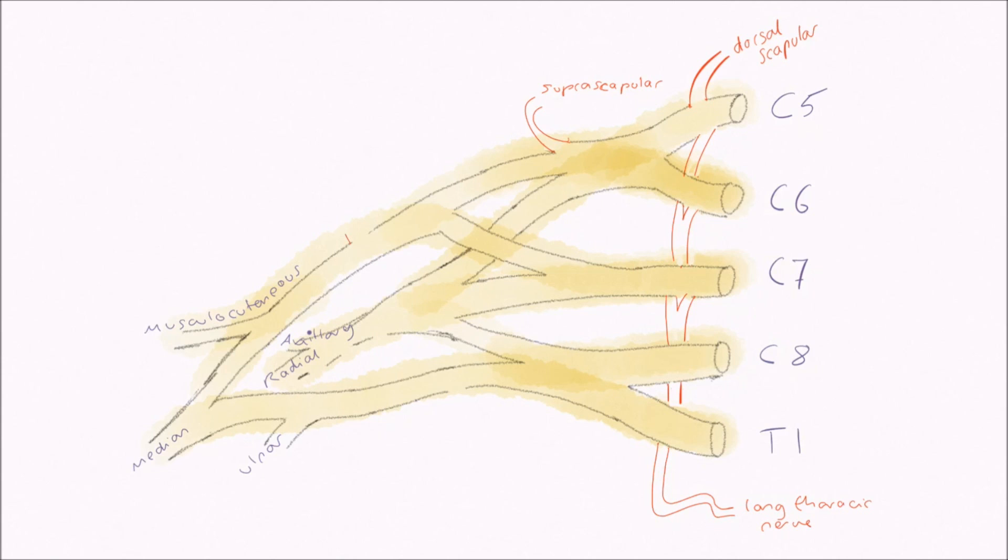Next up, the branches from the cords. From the lateral cord we have the lateral pectoral nerve, innervating pectoralis major. From the medial cord we have the medial pectoral nerve, which innervates both pectoralis major and minor. A good way to remember which way round the innervation is for these, is medial more, lateral less.